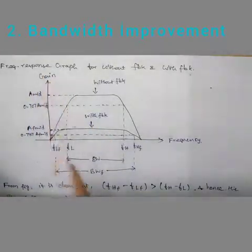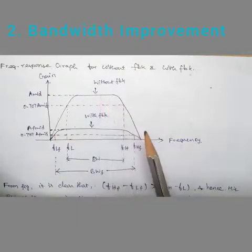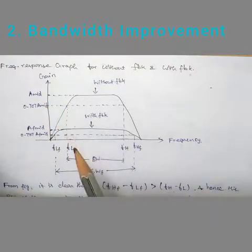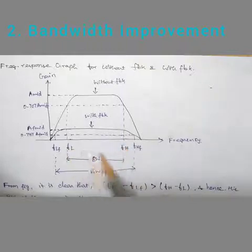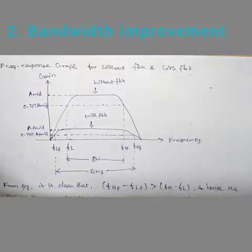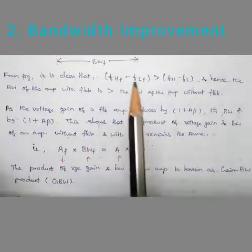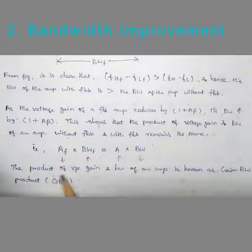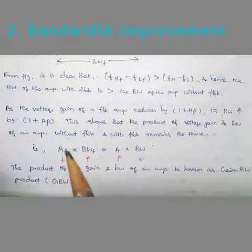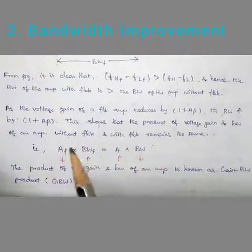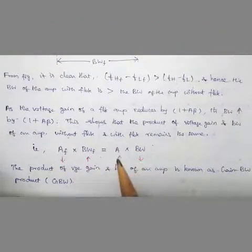In the frequency response graph, the amplifier without feedback has lower and upper cutoff frequencies f_L and f_H. With feedback, f_LF is lower and f_HF is higher, so the bandwidth with feedback is larger than without feedback — that is, f_HF minus f_LF is greater than f_H minus f_L. For the gain-bandwidth product: with feedback the gain decreases but bandwidth increases, while without feedback gain increases but bandwidth decreases, keeping the gain-bandwidth product constant.